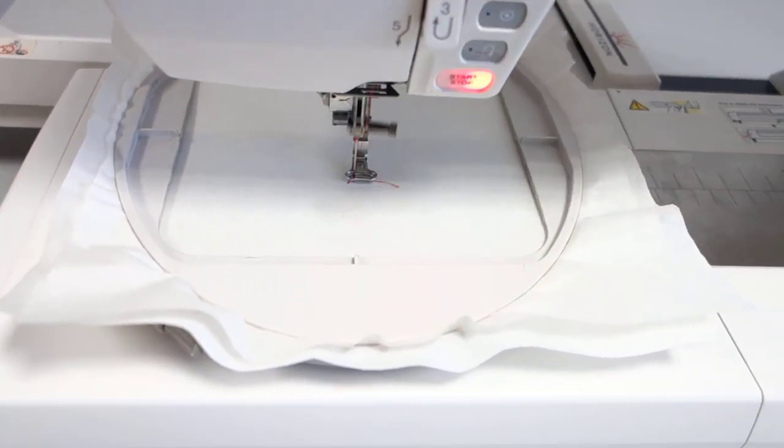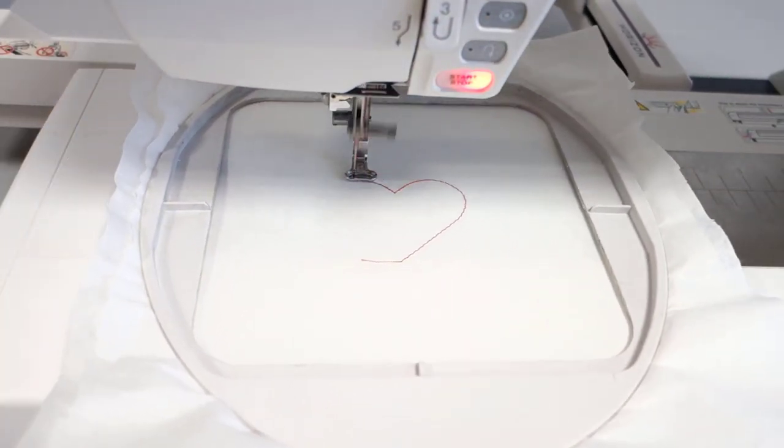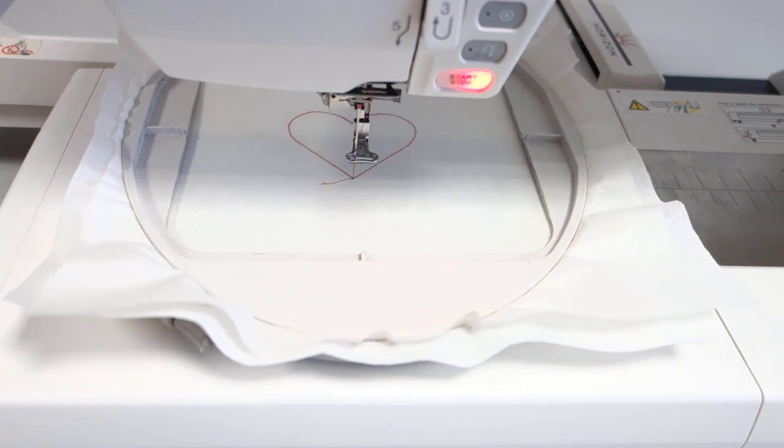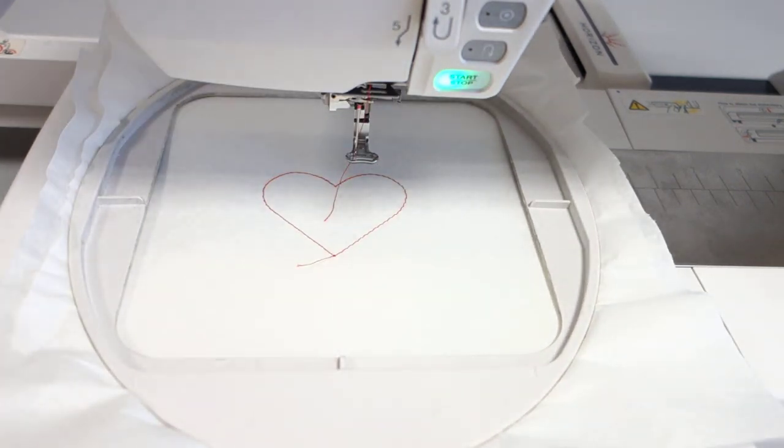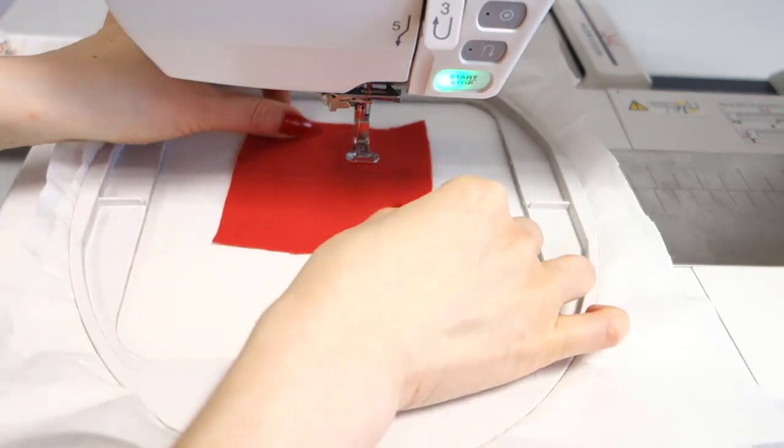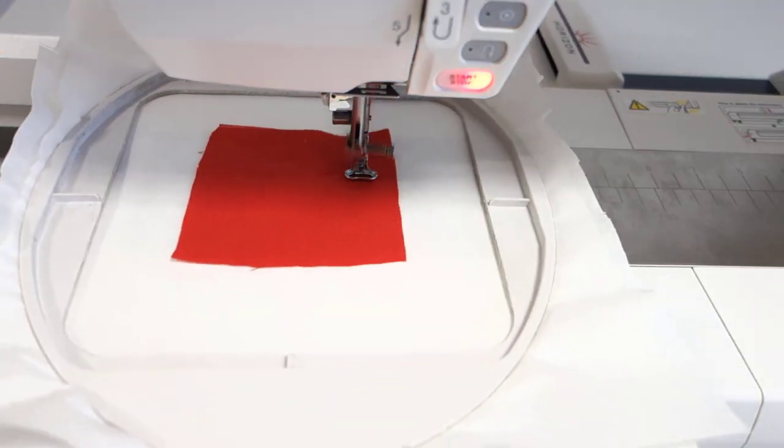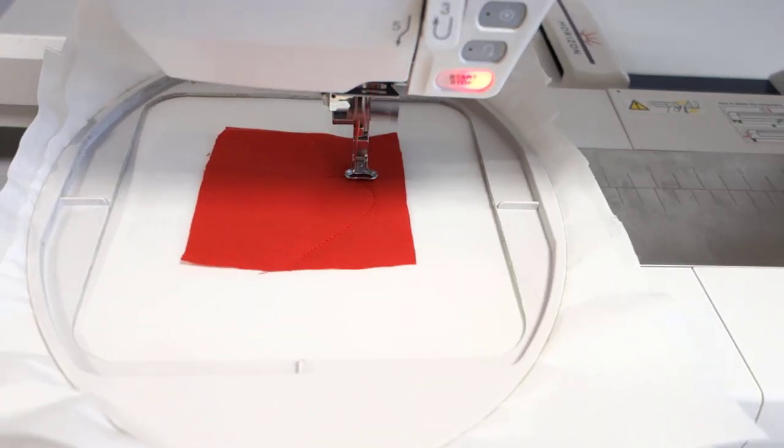At first placement stitches are added by the machine. These resemble an outline indicating where the fabric needs to be placed. As soon as you place the fabric, the machine will make holding stitches and the decoration stitches.